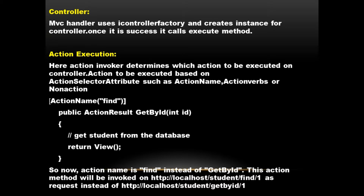Which action method to execute is determined in the action execution section using the action selector attribute. The action selector attribute includes action name, action verb, and non-action. For example, in a controller class you can use the action name attribute in square brackets to define an alias — so action name 'Find' instead of 'GetById' — meaning you don't want 'GetById' entered in the browser, you want 'Find' instead.